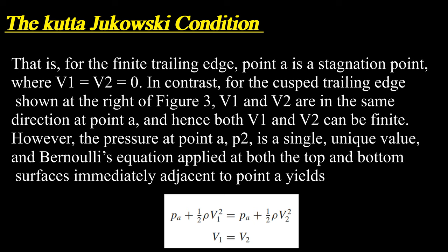In contrast, for the cusped trailing edge shown at the right of figure 3, V1 and V2 are in the same direction at point A, and hence both V1 and V2 can be finite. However, the pressure at point A, P_A, is a single unique value.